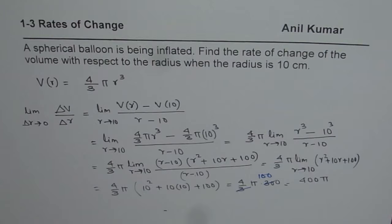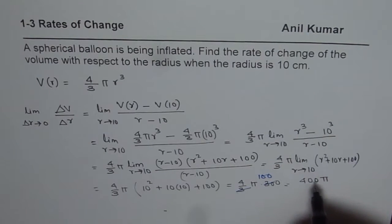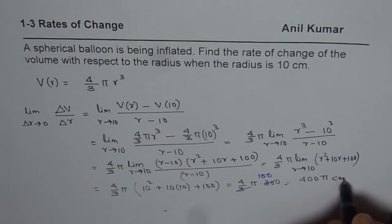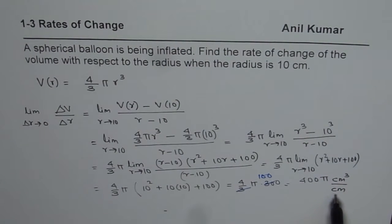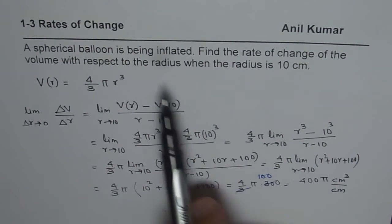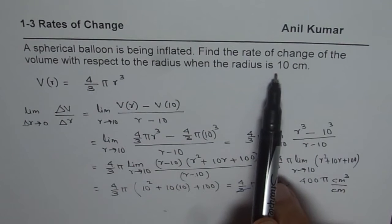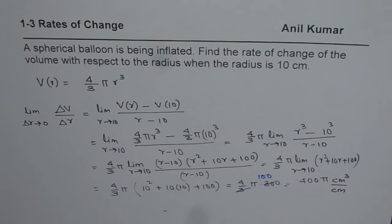So where the volume will be centimeter cube, so centimeter cube per centimeter. So the rate of change with respect to radius when the radius is 10 centimeter for the spherical balloon is going to be 400 pi centimeter cube per centimeter.